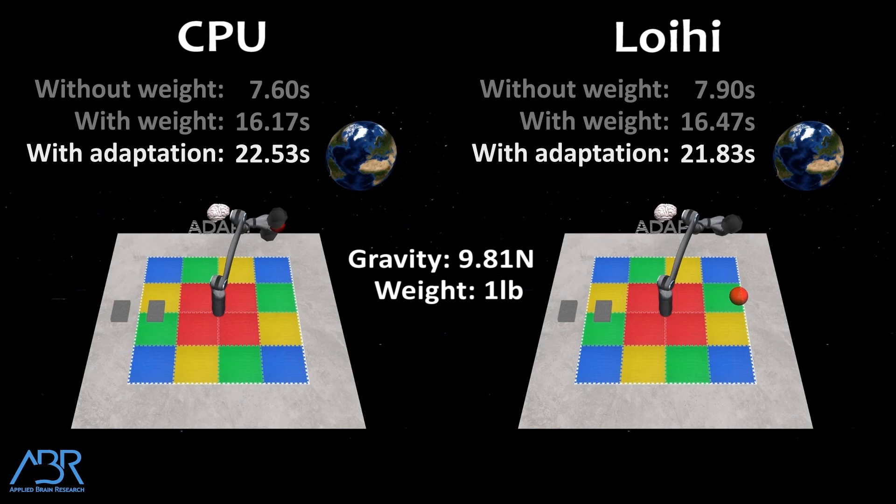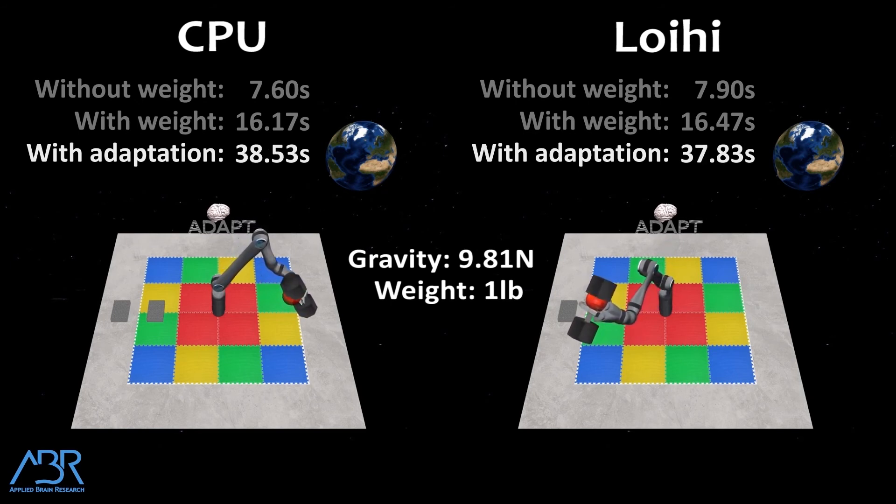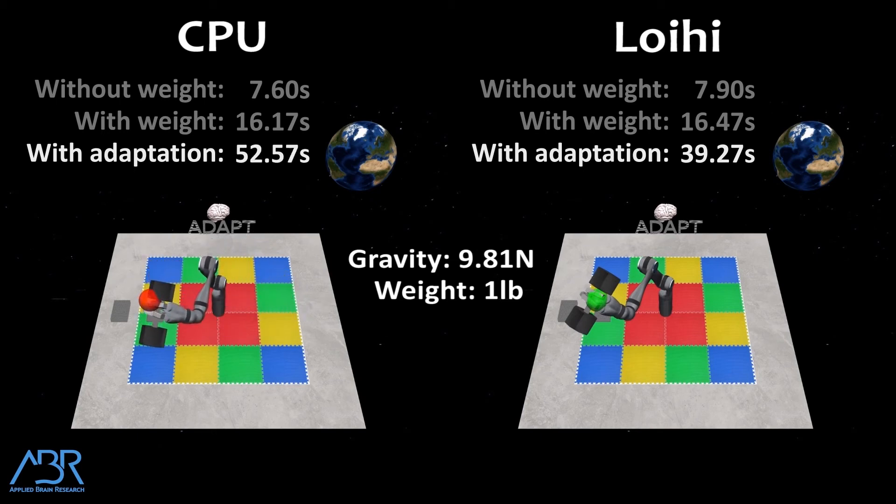When we augment our force controller with an adaptive neural control signal, we see that the neurons learn to account for the effects that the weight has on the arm. And as the arm reaches successive targets, it takes less and less time to adapt because it's building on what it's already learned. And the last thing to note in this video is that the CPU implementation is running much slower than the Loihi implementation, so that the Loihi implementation finishes in less than 40 seconds, while the CPU implementation takes almost a full minute to simulate the same amount of time.